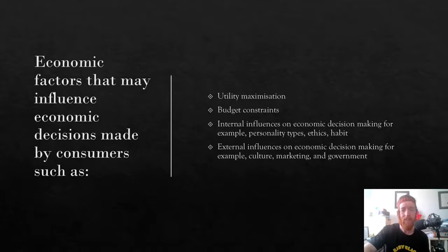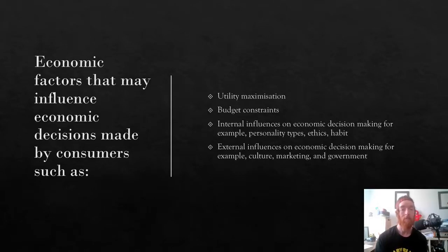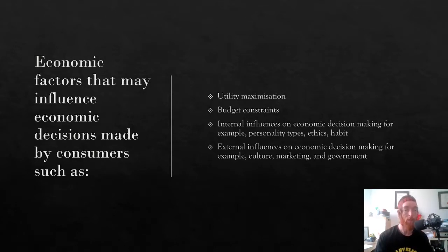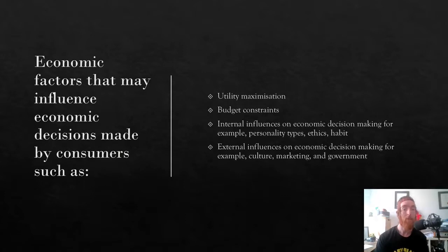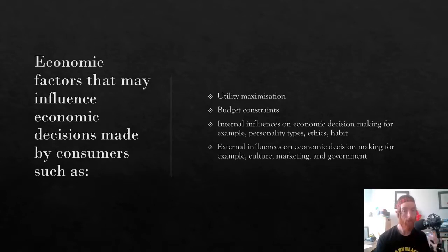External influences can be things like your culture. For example, if you were Italian, you're probably going to buy a lot more pasta. Also, marketing can affect you a lot from the external side — the whole point of good advertising is to make wants into needs. Companies pay millions to advertise during the Super Bowl to make people need their product. The government can also force you to spend on certain things, like legally requiring a helmet if you want to ride a bike.